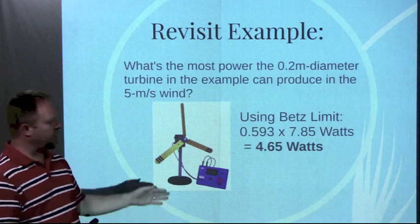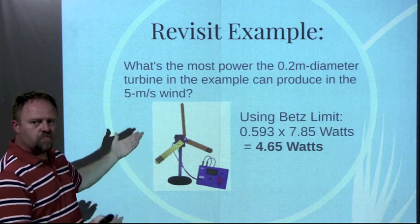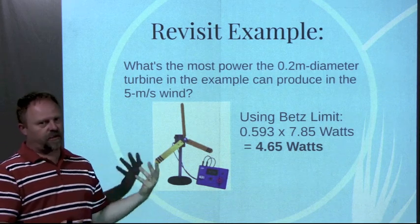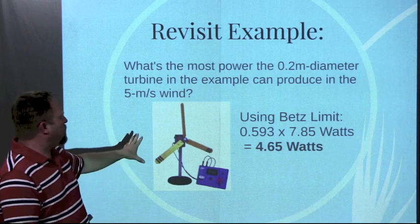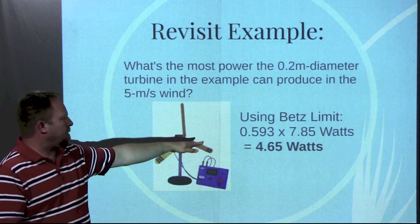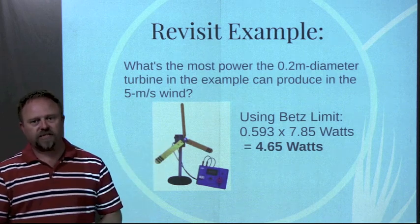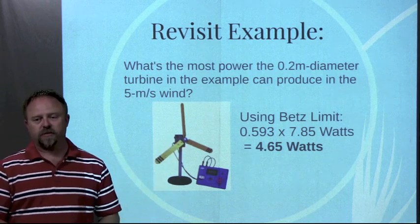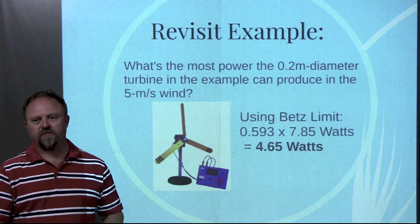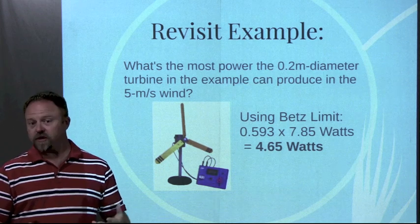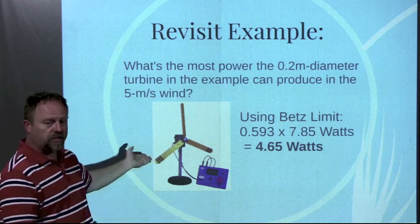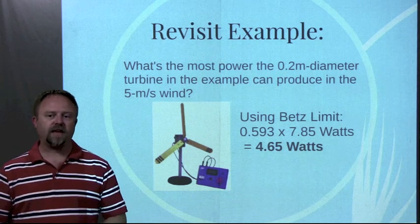For example, if we took that same little wind turbine and said, how much is the maximum we could theoretically capture from that wind turbine? If we use our Betz limit of 59.3% and multiply that by the 7.85 watts that we calculated before, we'll end up with around 4.65 watts is what we could actually capture theoretically. Probably a small wind turbine like this probably wouldn't be that efficient.